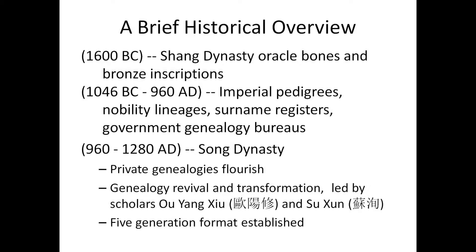The earliest writings in Chinese civilization — oracle bones and bronze inscriptions — had genealogical information on them. The great historian of China, Sima Qian, who wrote the grand history of China around the time of Christ, put most of it together by researching genealogies. From about 1000 BC you start to find imperial pedigrees. Nobility and gentry classes had genealogies, and there were surname registries with government bureaus that kept these — because the government was staffed through using genealogies, keeping it within certain classes and families.